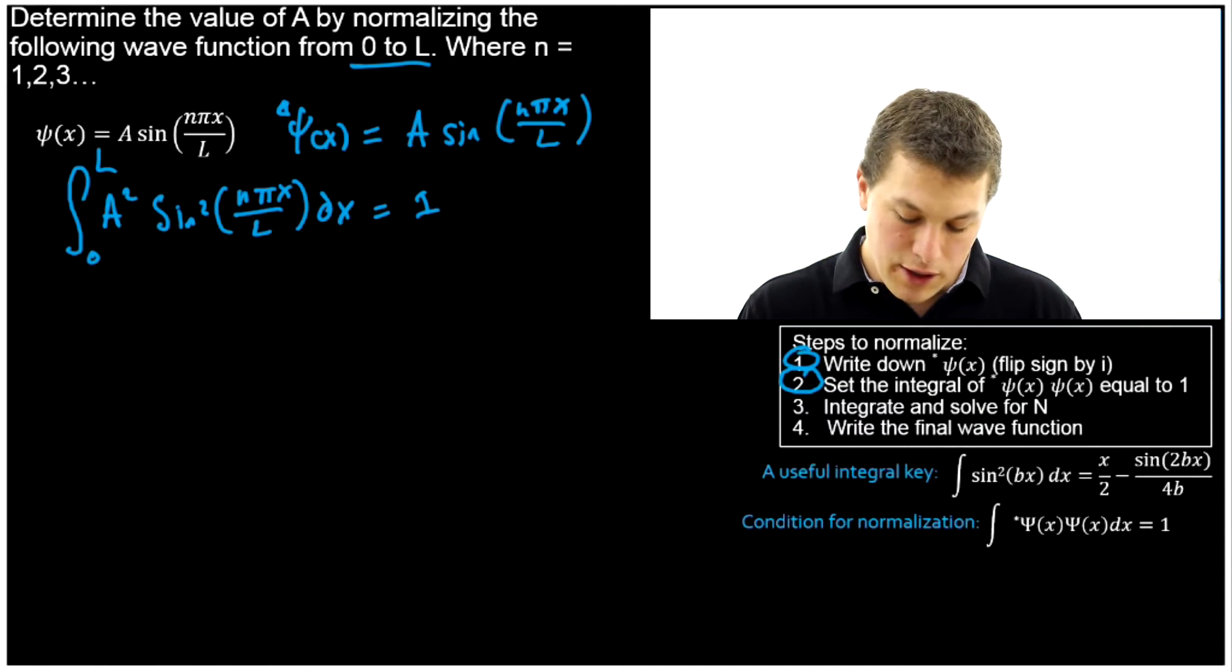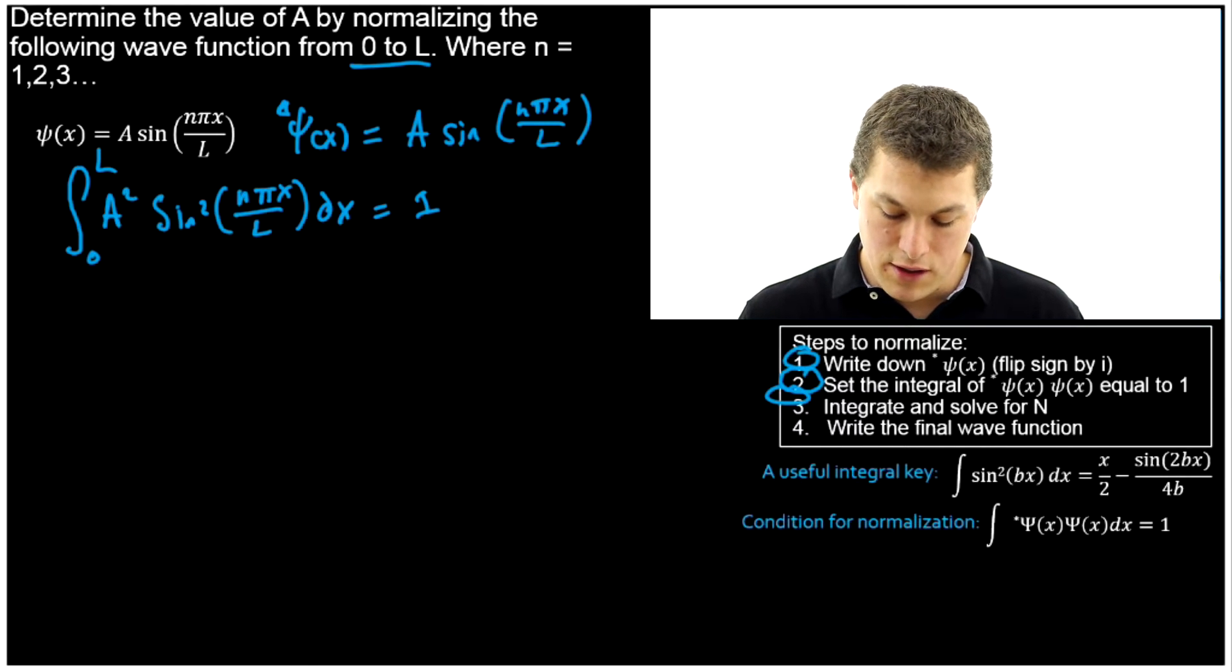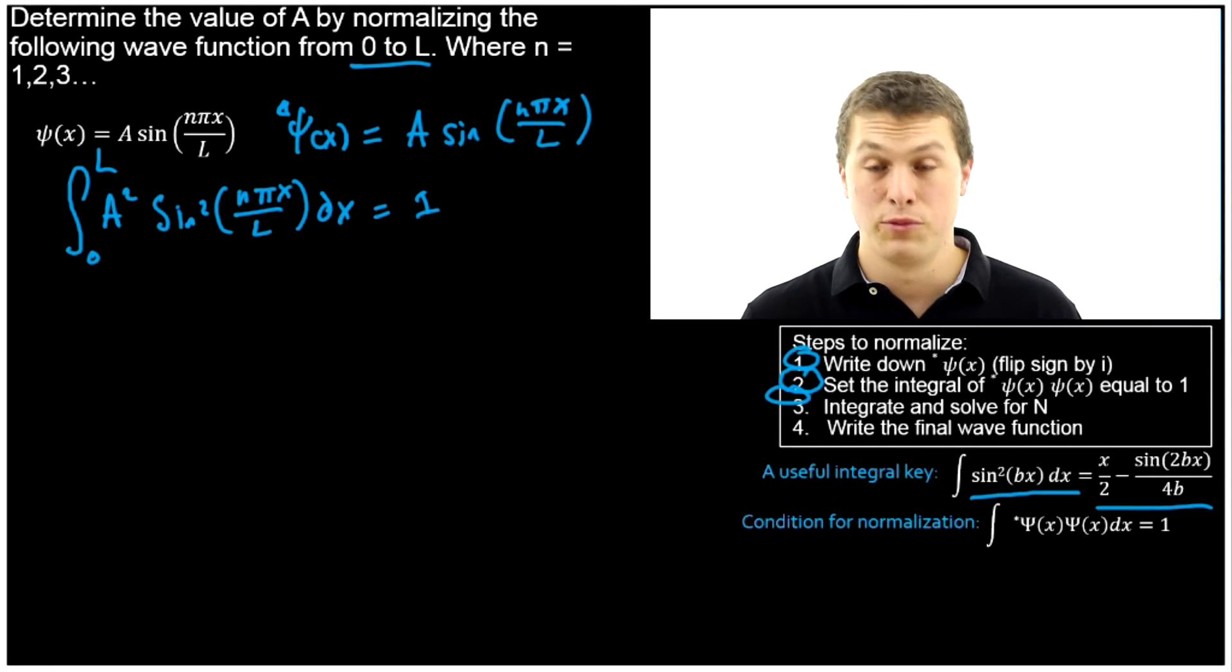Now we're going to go ahead and integrate it and solve for n. Critically here, this integral is a little tough. This is why it's often skipped in the derivations. Now, if you have an integral key, not so bad. Or you can use some trig identities, that also works.